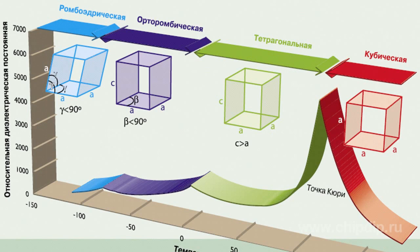In other words, polarization results from the initial symmetry of the crystal structure, which occurs in the absence of an external electric field or pressure. Such polarization type is referred to as spontaneous polarization.